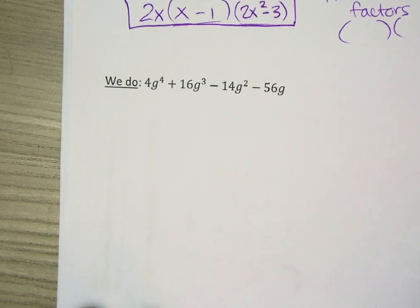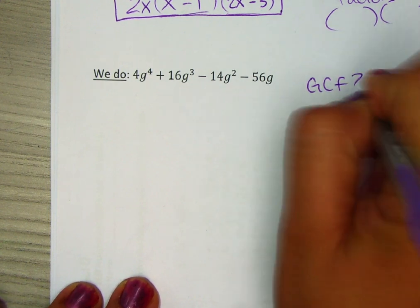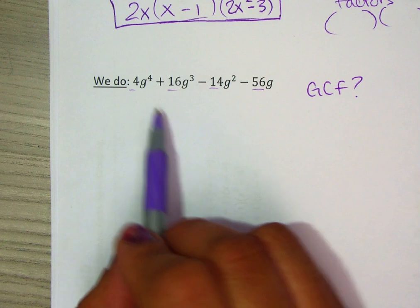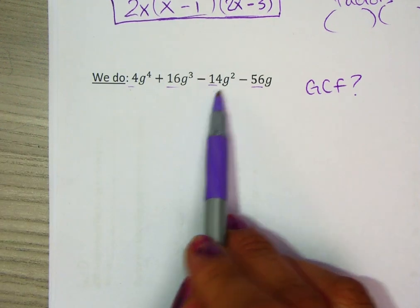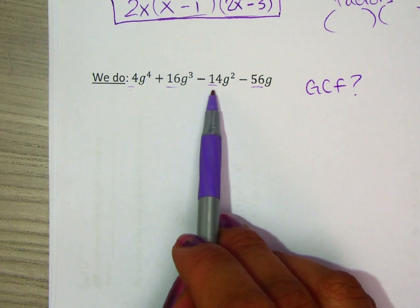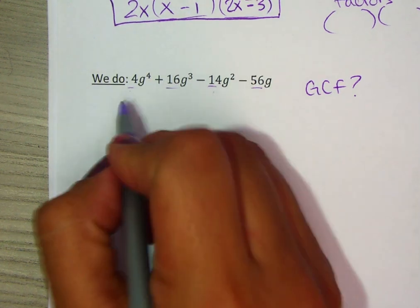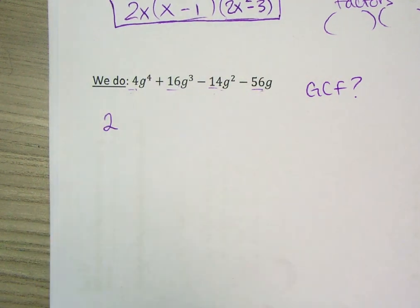So this polynomial becomes this factored form polynomial. I'm going to try one more example. The next one, again, we ask ourselves, is there a GCF? 4, 16, 14, 56. 4 and 16 can be divisible by 4, but 14 cannot. The only numbers that 14 can be divisible by is 2 and 7. Since they all are even numbers, 2 will be your greatest common factor for the numbers.